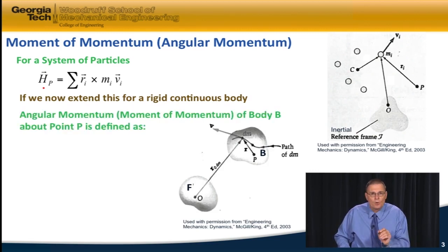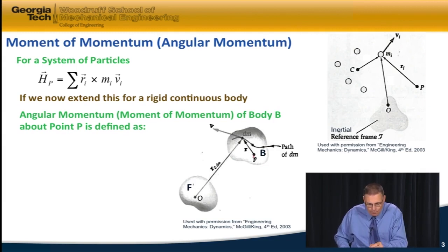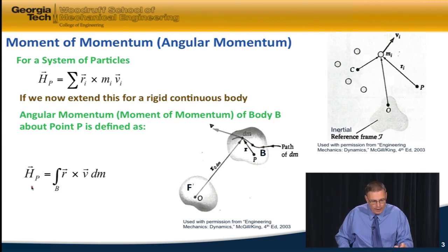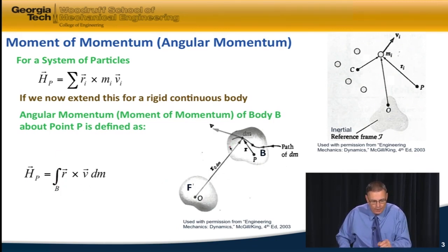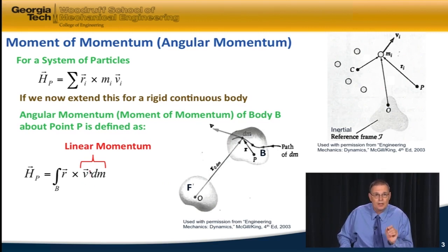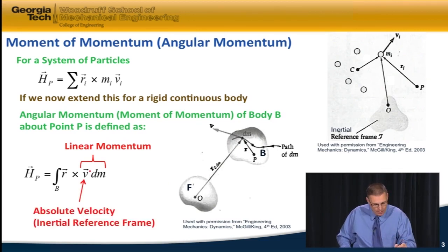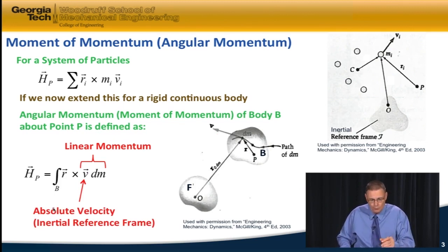The angular momentum, or moment of momentum of body B about point P, is defined as the integral of r — these little position vectors — crossed with V dm, which is the linear momentum of each differential piece of mass. We have to be careful, because this velocity must be an absolute velocity — it has to be defined with an inertial reference frame, which I'm calling frame F.